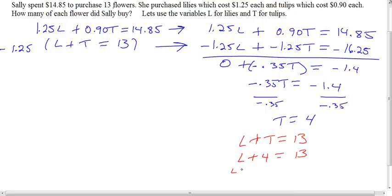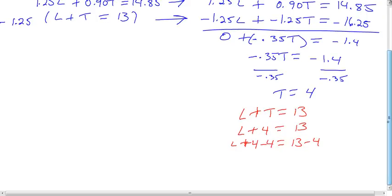So L plus 4 minus 4 equals 13 minus 4. That gives us L equals 9. All we need to do now is go back and write our ordered pair, which is step 4.